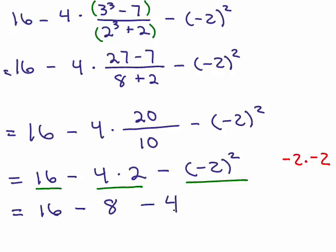And now I have to subtract from left to right. So 16 minus 8 is 8, and then I have minus 4, and then finally, 8 minus 4 is 4. So this all simplifies to 4.